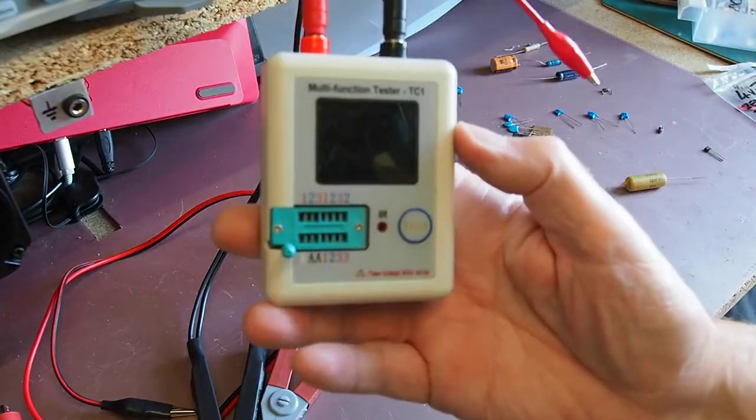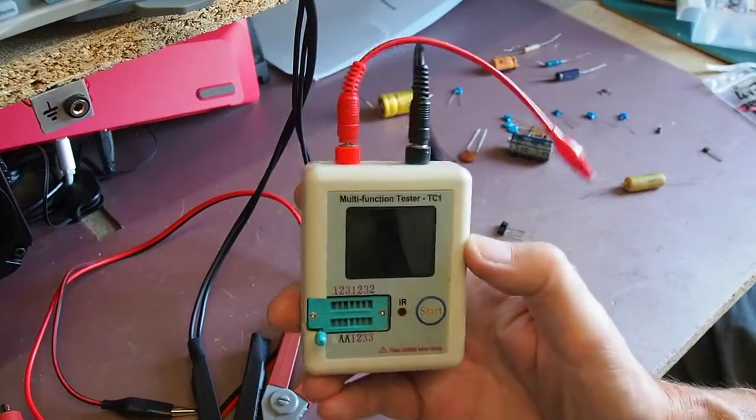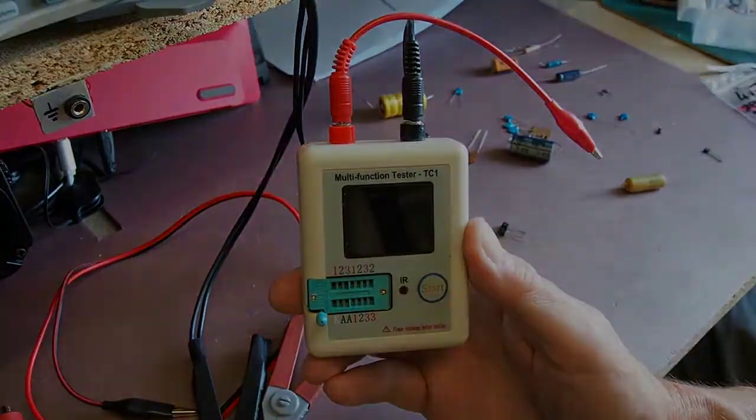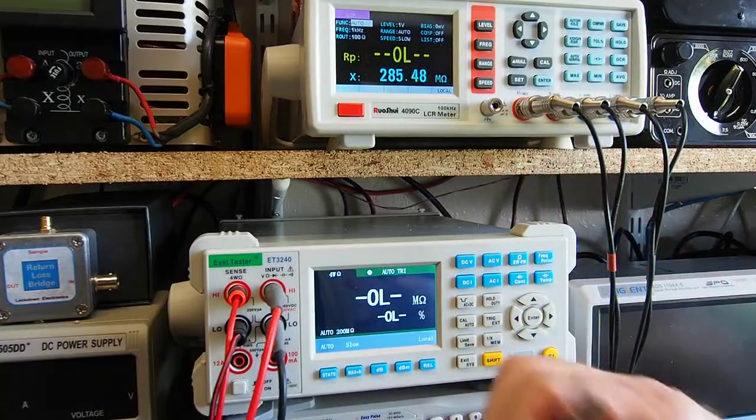Now some Zener diodes are so small that it's difficult to actually see the markings even if they're on there, so it's great to be able to have a device which will actually tell you things like that. So definitely gets full marks for its semiconductor identification.